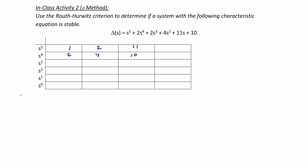The first thing we're going to find is b1. b1 is equal to negative 1 times 4 minus 2 times 2, divided by 2, which equals 0. So we're going to put 0 here, but instead of keeping the 0 in our first column, we're actually going to give it a small positive value we're going to call epsilon, where epsilon is a small number greater than 0.